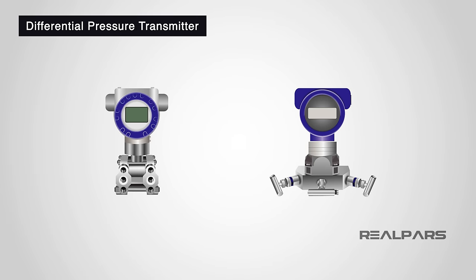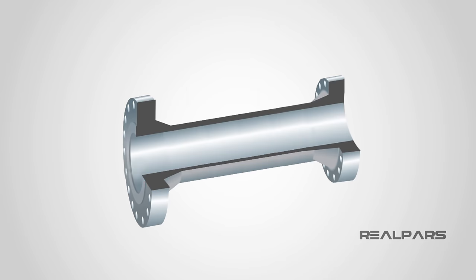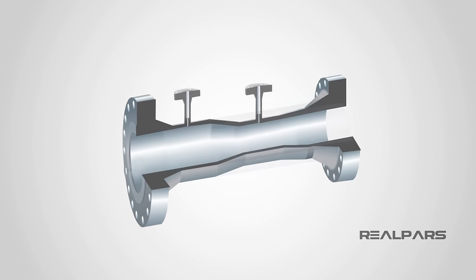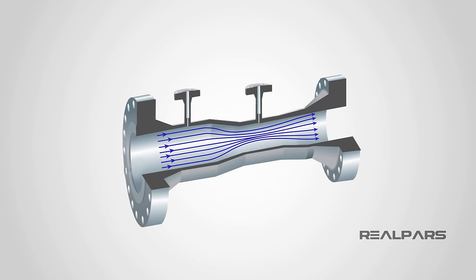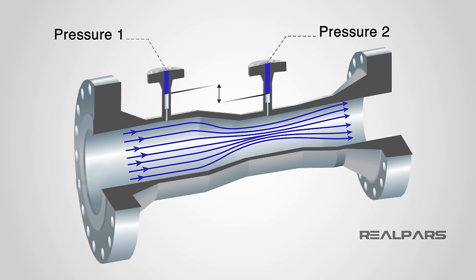Now that we know what pressure is and how a DP transmitter works, what is it used for? The most common applications are for measuring level and flow. Here, we'll discuss how a DP transmitter measures the flow of water in a pipe. One very common way of measuring flow using a DP transmitter is for the primary element to introduce a constriction in the pipe. Using a restrictive element on the primary side will create a high and low pressure. When the flow increases, more pressure drop is created.